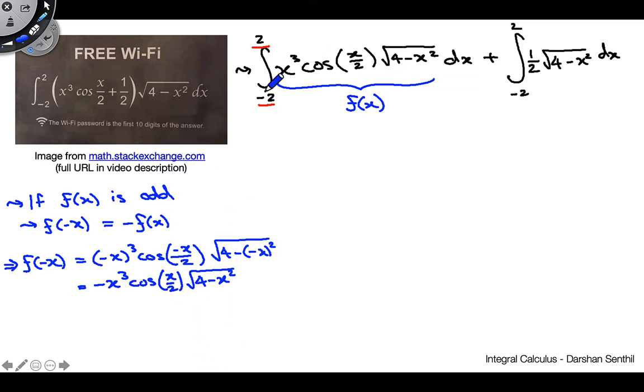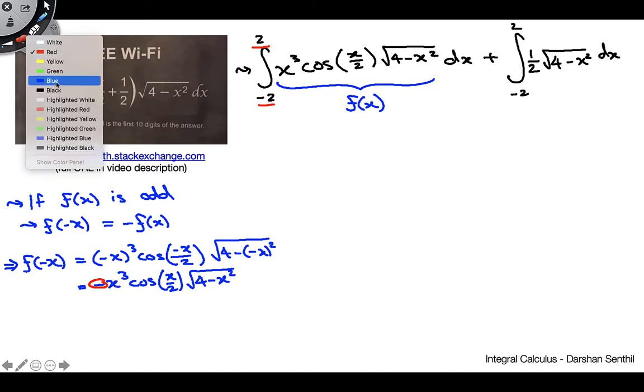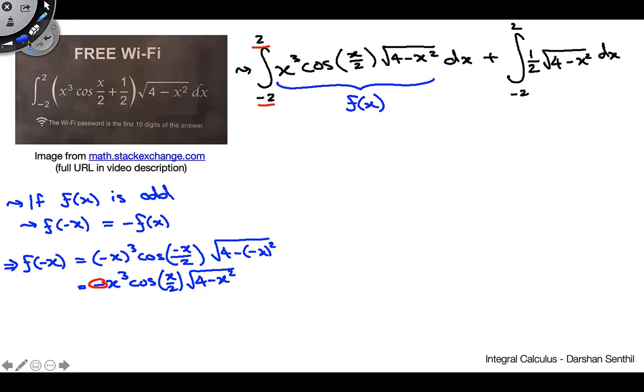That's about all we can really do with that. But now we can compare this to what we have over here for f of x originally. We can notice that they're exactly the same thing except for this minus sign up here. Right? Everything else is exactly the same except for that minus sign here. So we can conclude, therefore, that this whole thing, the f of negative x, is in fact just equal to negative f of x.